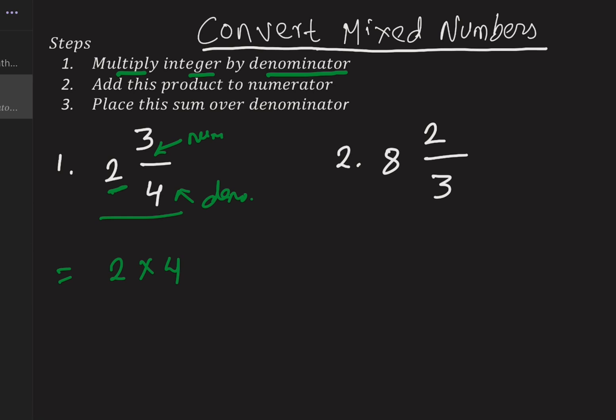Step 2, add this product to the numerator. 3 is the numerator, so we have to add that to 3. And the third step is place this sum over denominator.